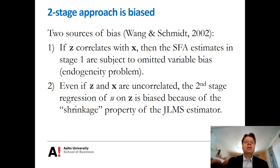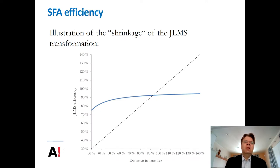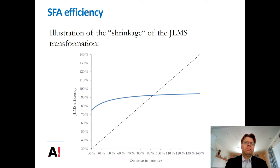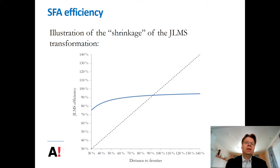This is something I already indicated when we discussed SFA earlier. The JLMS estimator translates the distance to frontier to efficiency — even if an observation is located above the production function, it has some degree of inefficiency according to the frontier model. There is a monotonic increasing transformation, and the variation of the inefficiency or efficiency score is much more compressed than the distance to the frontier. This is exactly what Wang and Schmidt refer to by shrinkage. By using JLMS we effectively scale this distance to frontier, and because of this scaling, even if the Z variables do not correlate with X, regressing the estimated inefficiency on the Z variables will be biased towards zero.